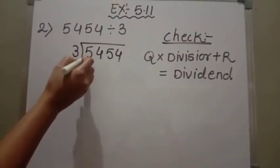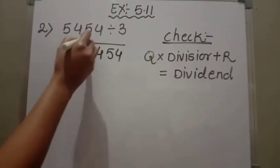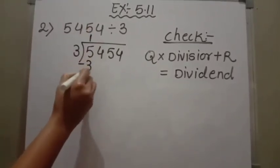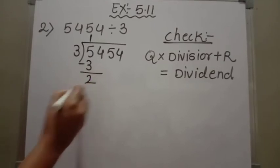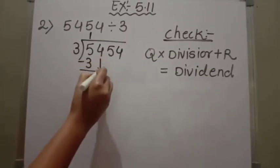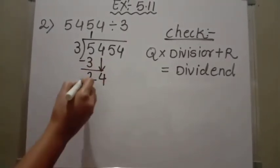First we divide the first digit by 3. Now 3 ones are 3. 5 minus 3 equals 2. Then the next digit, 4, will come down. So it is 24 now.